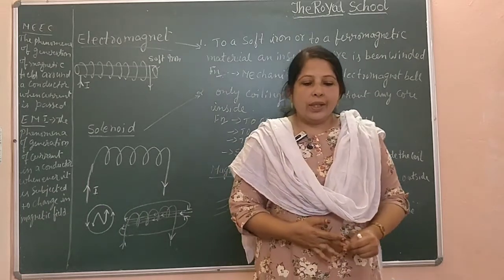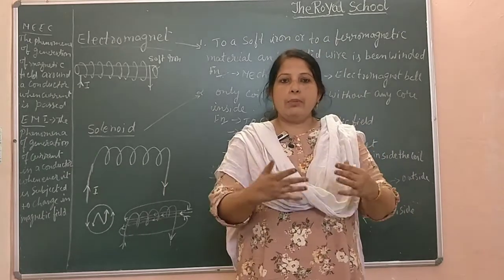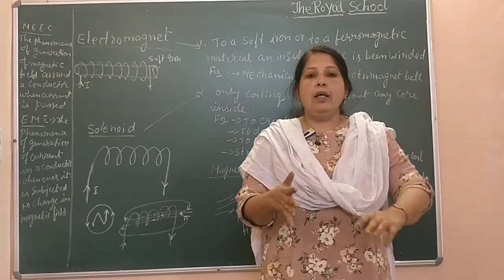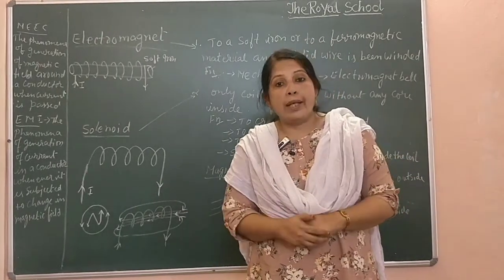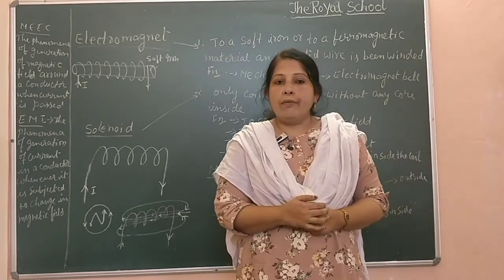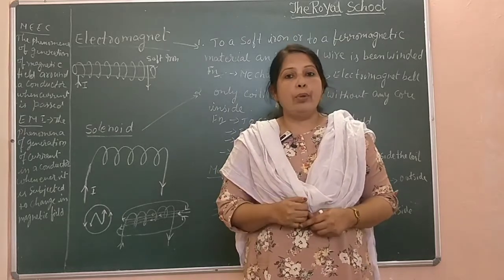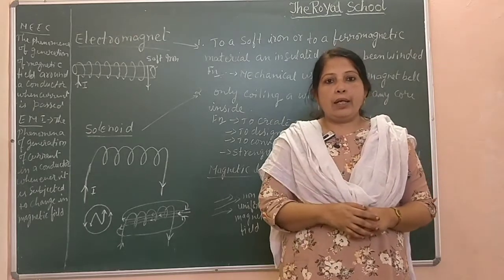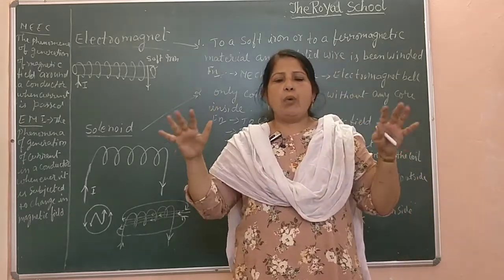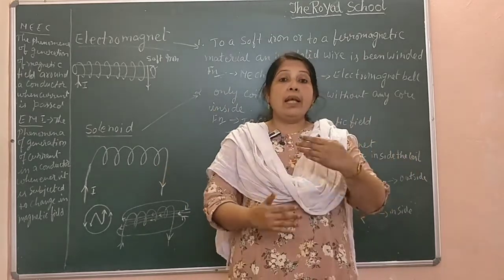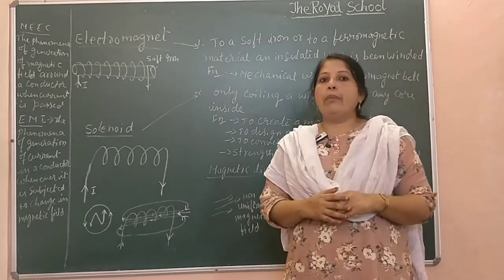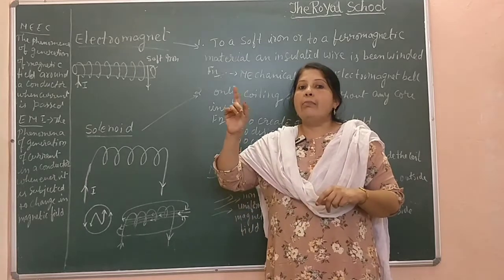Hello everyone. Today we are going to study another part of our chapter — magnetic effect of electric current. In the previous videos we studied what is magnetic effect of electric current and electromagnetic induction, its definition, Fleming's left hand rule, Fleming's right hand rule, and the right hand thumb rule. We also came to know that the magnetic effect of electric current was discovered by Oersted and electromagnetic induction was discovered by Michael Faraday.